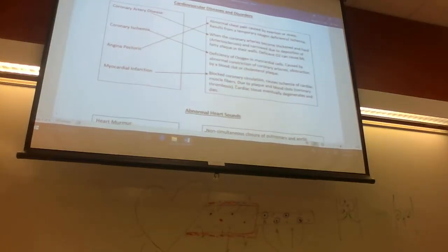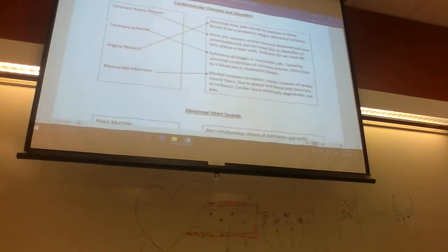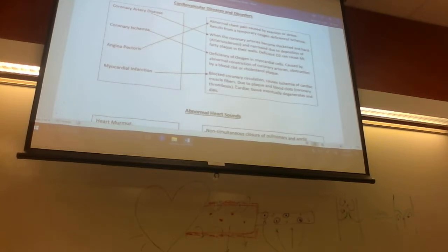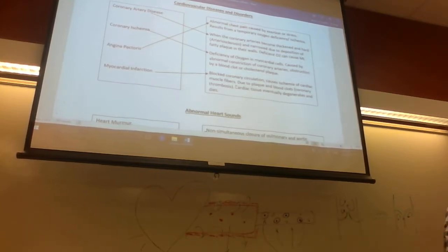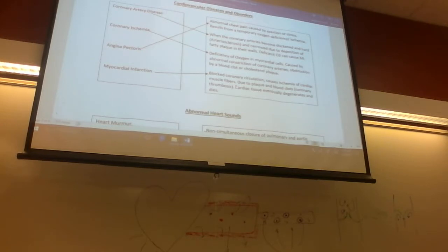The first disease we have is coronary artery disease, also known as CAD. This happens when the coronary arteries — which supply blood to the heart — become thickened and hard. That hardening is called atherosclerosis. Coronary artery disease means thick, hard, and narrowed arteries, and this is because of plaque in their walls.